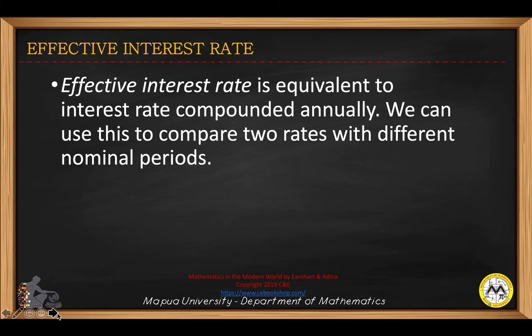Effective interest rate is equivalent to interest rate compounded annually. We can use this to compare two rates with different nominal periods. The formula for the effective rate is equal to 1 plus J over M, raised to M, minus 1, where J is the compounding interest rate and M is the number of periods in a year.